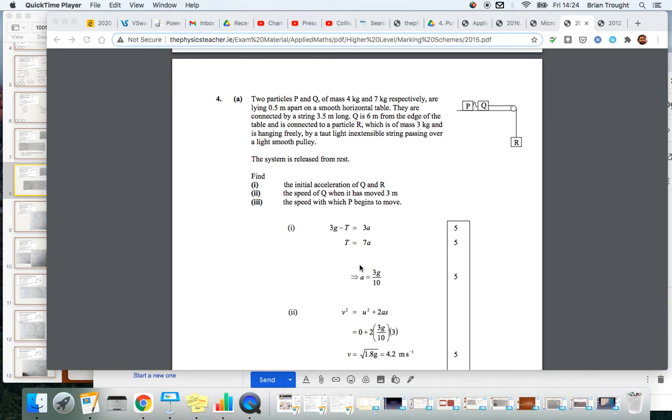After that then we need the velocity with which that particle reaches after it travels the 3 metres. Because it's already half a metre apart, so when it travels 3 further metres it'll be 3.5 metres from P, the string will become taut. So it travels 3 metres, the acceleration is that because it's connected to R and we have a 2 there, it starts from rest. So we get the velocity is equal to 4.2 metres per second.